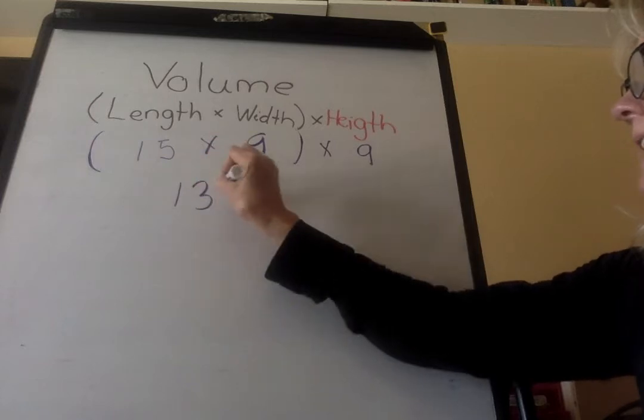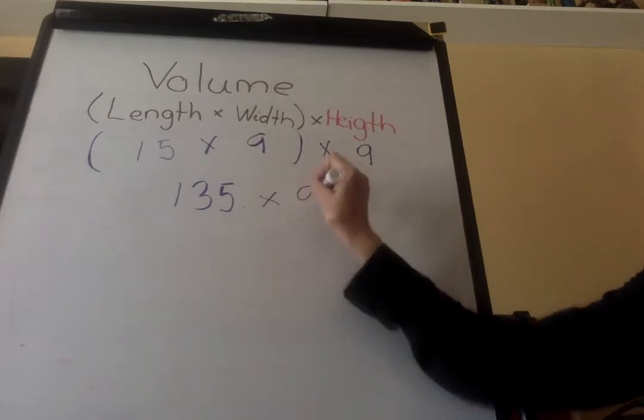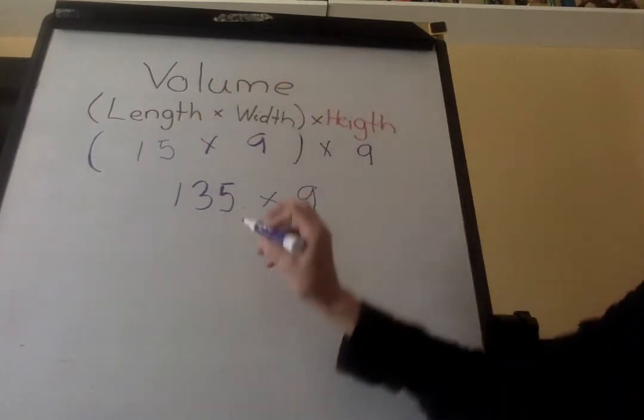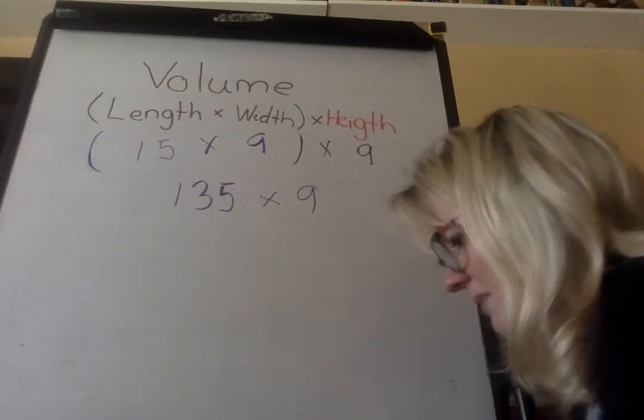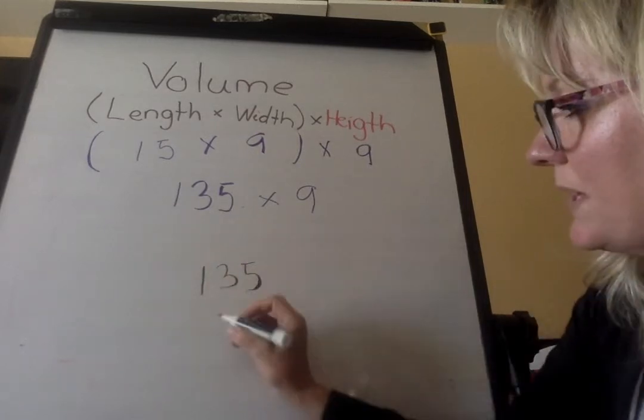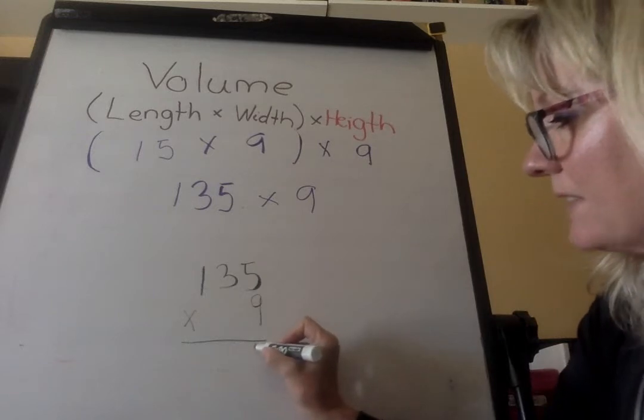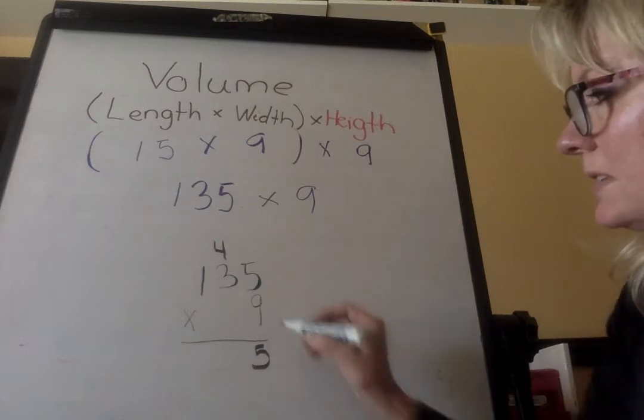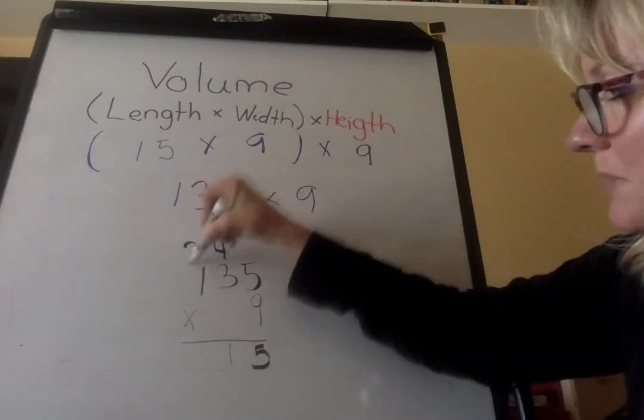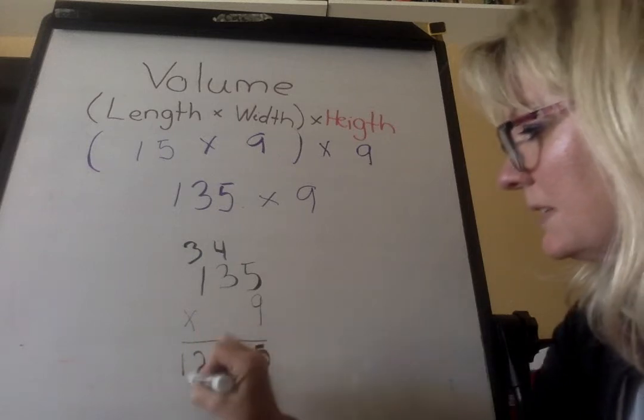So I'm going to write down 135. But according to my PEMDAS here, I still have to do this third step. I have to times it by 9. So now I have the last step in my problem. Remember, volume is three steps: length times width and then times the height. I don't know 135 times 9 in my head, so I'm going to write it down again. You have to do some work. So 135 times 9. 5 times 9 is 45, I put down the 5 and regroup a 4. 3 times 9 is 27 plus 4 is 31, so I put down the 1 and regroup the 3. 1 times 9 is 9 plus 3 more is 12.